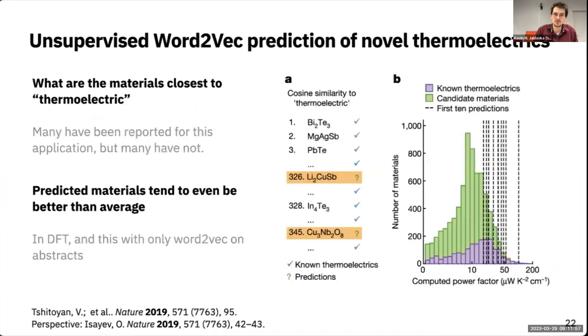You can even go beyond this and make predictions. You can ask what is my embedding vector for thermoelectric, get some vector, and see what's closest in compound space to this vector. You then have this ranking of different compounds. Many of them are known to be good for thermoelectric applications - that's the check mark. But some are unknown so far for this indication - that's the question mark. They did DFT simulations to check those predictions. This is shown on the right in the histograms - the power factor that tells you how good those materials are for thermoelectric applications. Larger is better. For the first predictions they make in this way, without any labels, with just the abstracts, they outperform what has been known so far.